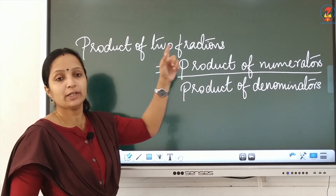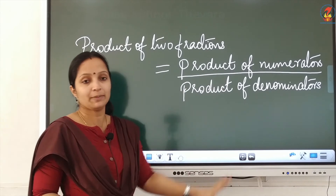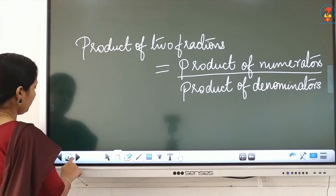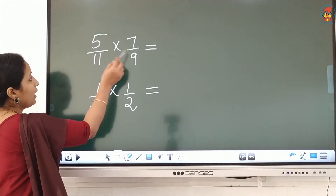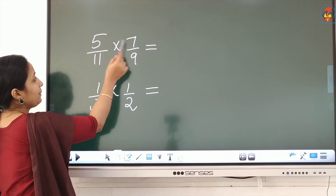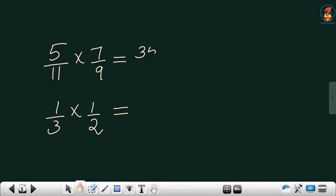If you want to multiply two fractions, multiply the numerators and multiply the denominators. Now look at this question: we have to multiply these two fractions. Multiply the numerators — 5 into 7 equals 35. Multiply the denominators — 11 into 9 equals 99.